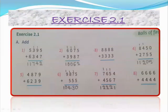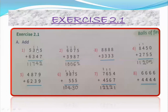Next, Exercise 2.1 — section A: Add. First problem: 5,395 plus 6,347. Add the ones place — 5 plus 7 equals 12. Write 2 in the ones place and carry 1 to the tens place. 9 plus 1 equals 10, then 10 plus 4 equals 14 — write 4 in the tens place and carry 1 to the hundreds place. 1 plus 3 equals 4, then 4 plus 3 equals 7. In the thousands place, 5 and 6 — 5 plus 6 equals 11. The answer equals 11,742.